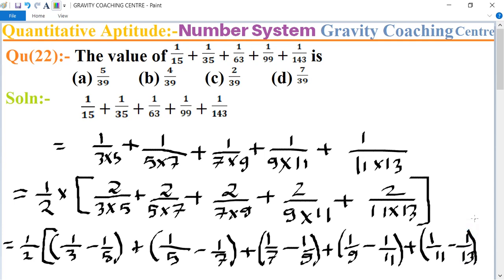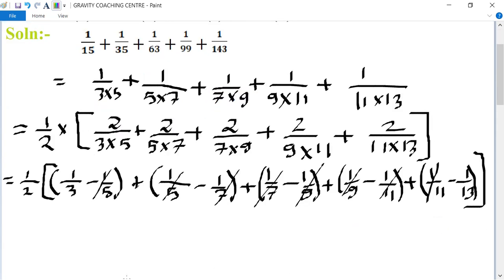So in the big bracket, here 1/5 and 1/5 cancel, 1/7 cancels, 1/9 cancels, and 1/11. So what's left is 1/3 minus 1/13, and the LCM is...